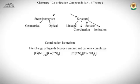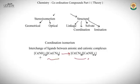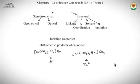Coordination isomerism arises from the interchange of ligands between anionic and cationic complexes. For example, in one compound chromium is bonded to NH3 and cobalt to CN⁻ ligands, while in the coordination isomer these ligands are swapped — chromium bonds to CN⁻ and cobalt bonds to amine ligands.